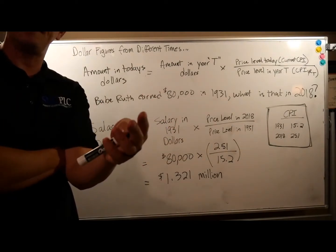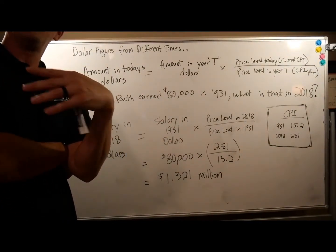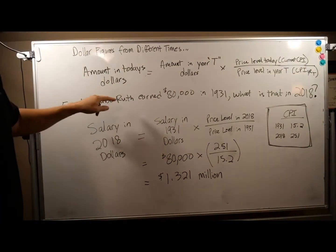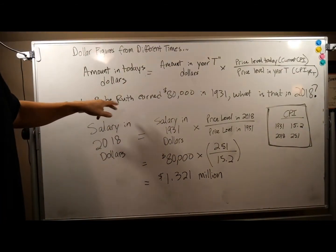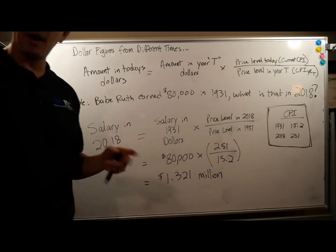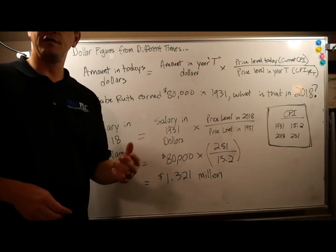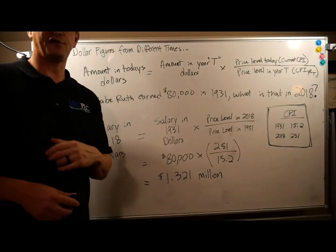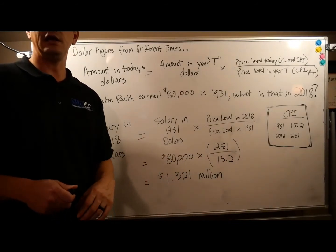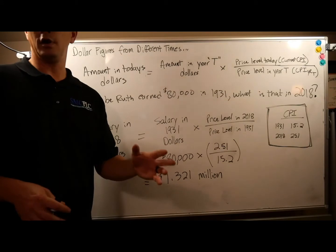So in 2018, having $1.32 million would be like what Babe Ruth felt like in 1931 at $80,000. Now, if you know anything about Major League Baseball and the history of it, Babe Ruth was a stud. He was the home run champion and an outstanding pitcher — he could just do it all.